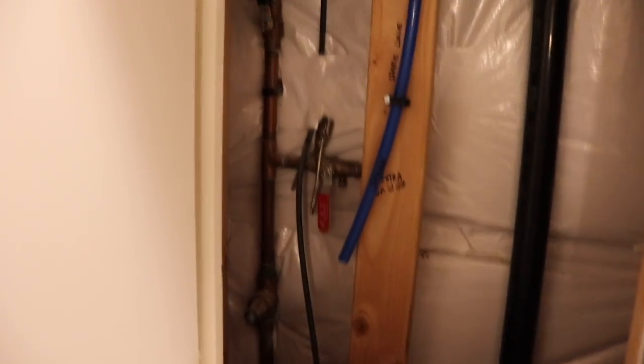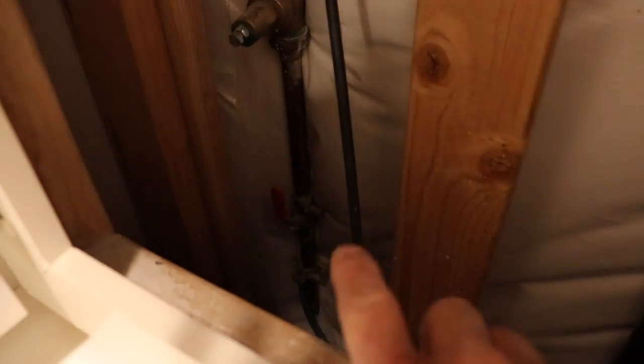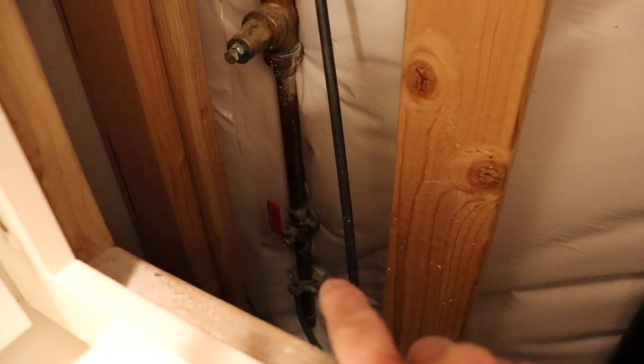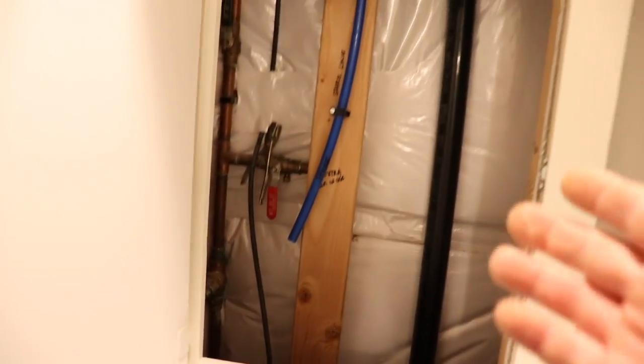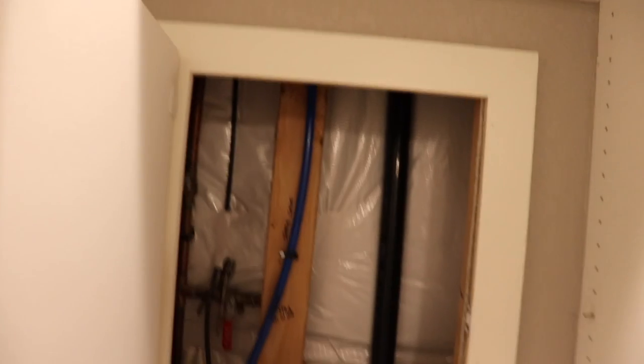To give you guys an idea of what's inside, right here we have our sprinkler shutoff and then we have the main water shutoff to the main house. So these are just some ideas that you can do in your home to kind of mask the ugliness if you will.